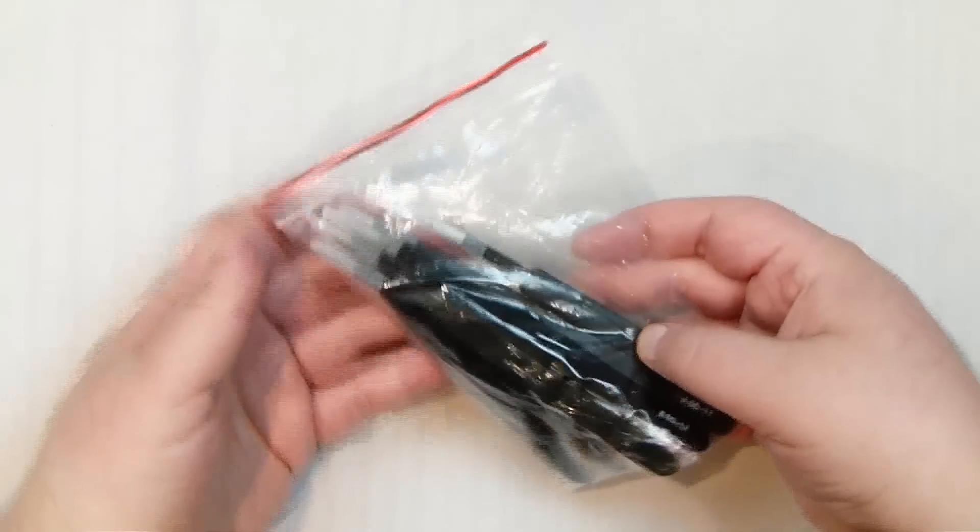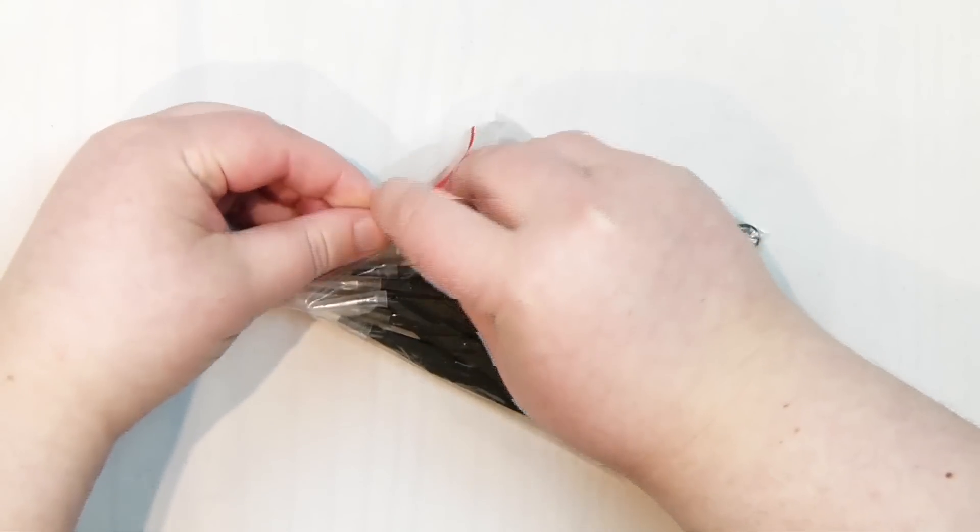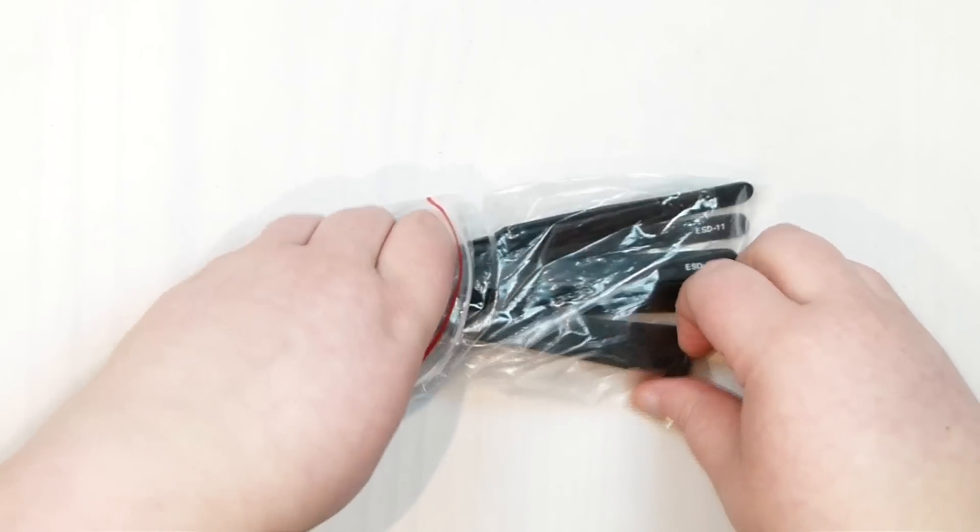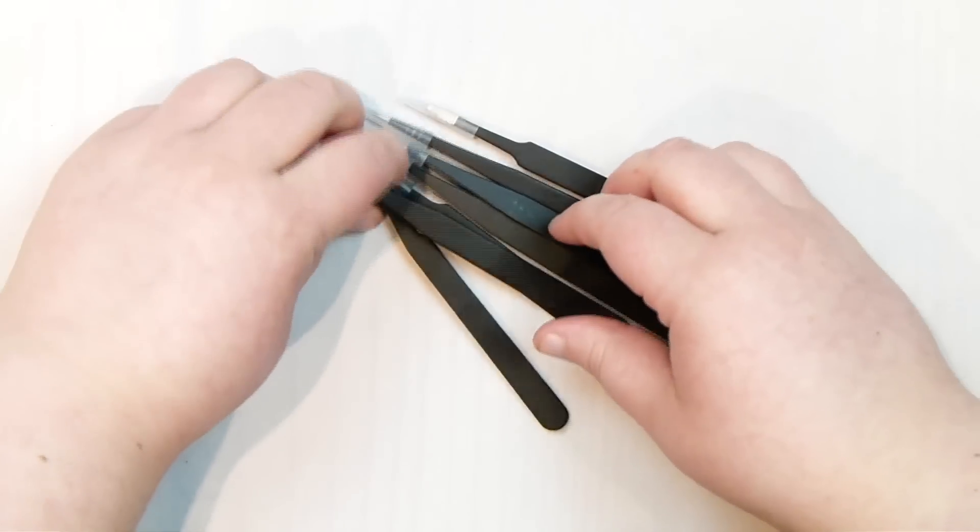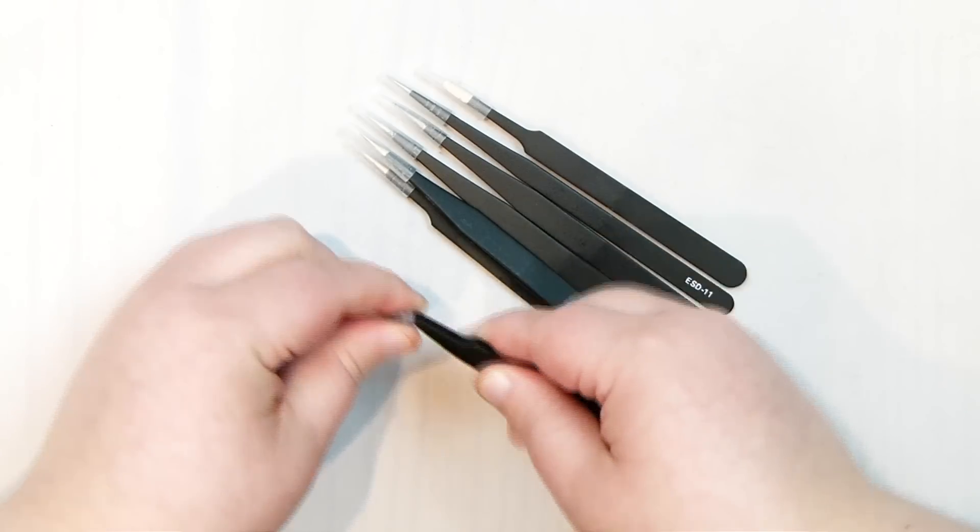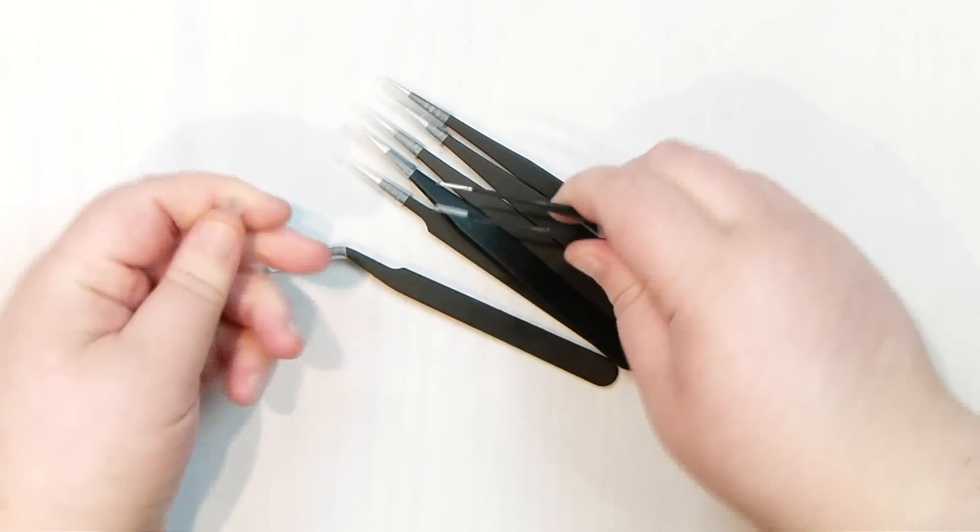Another thing that can be quite handy to have sometimes are some tweezers. So this is also just a set that I got with loads of different ones, so sizes and shapes here. As you can see, this is just - you have an angled one, for example, can be quite handy to use. But these are also quite fine in the tips.